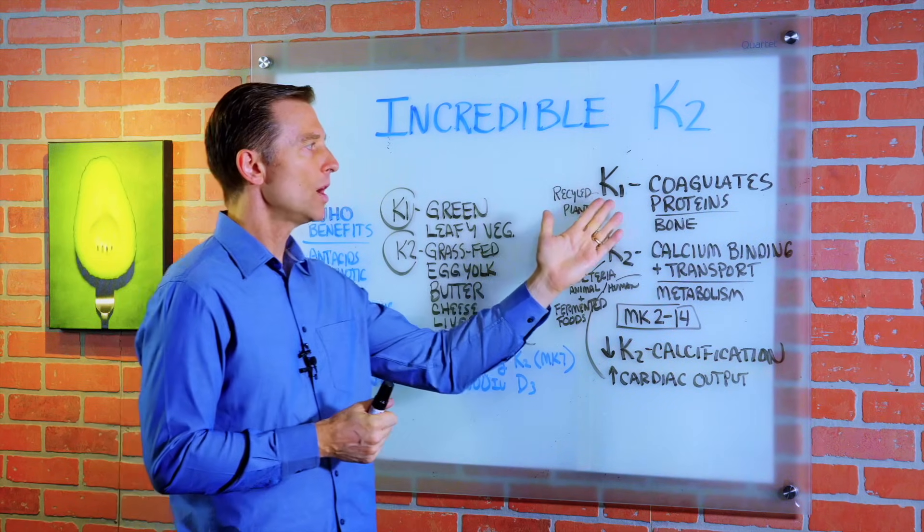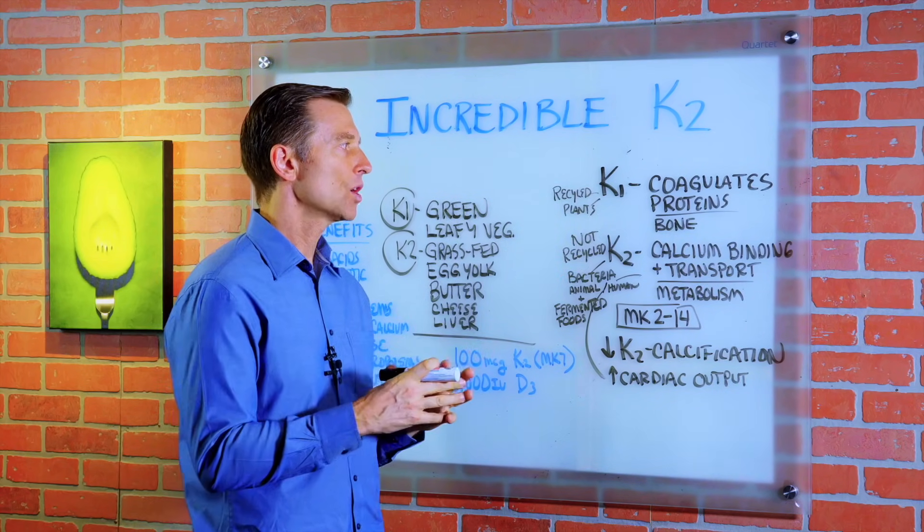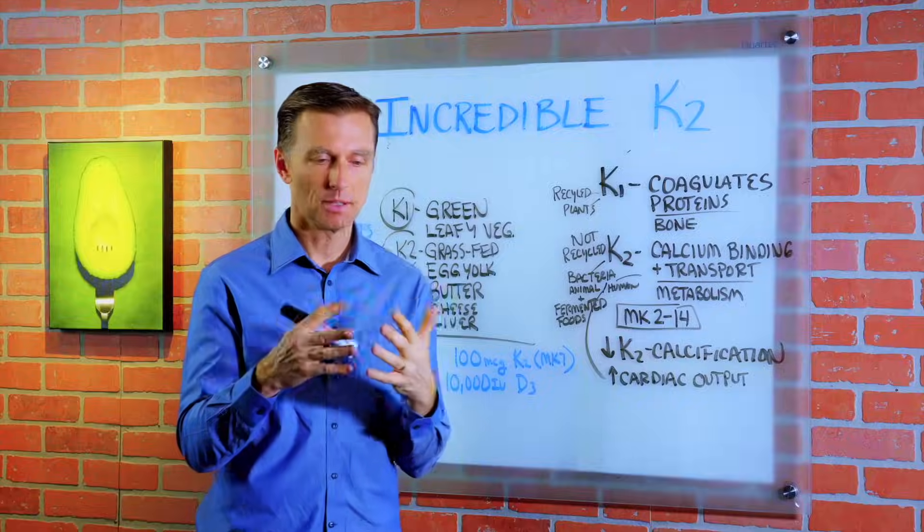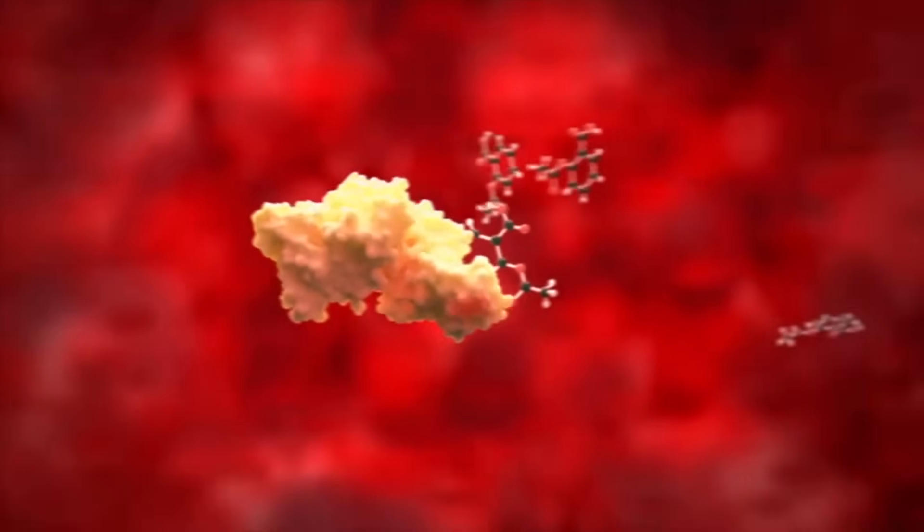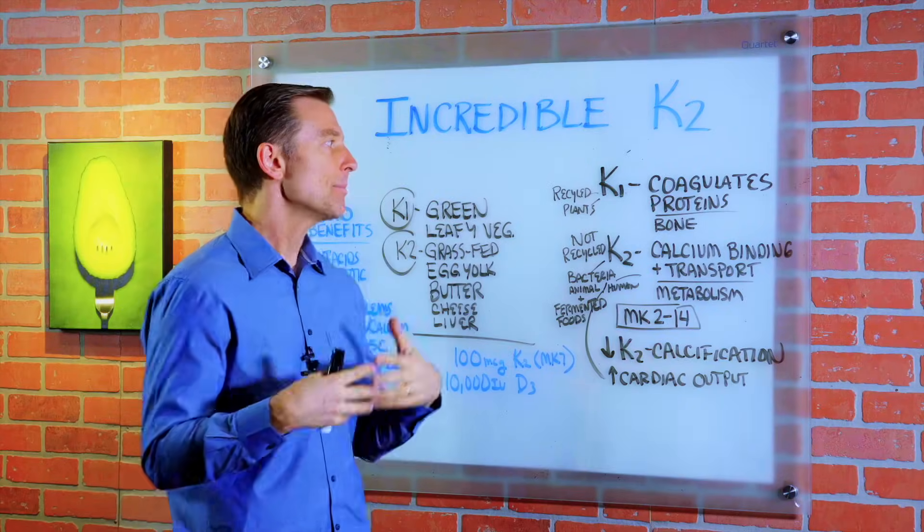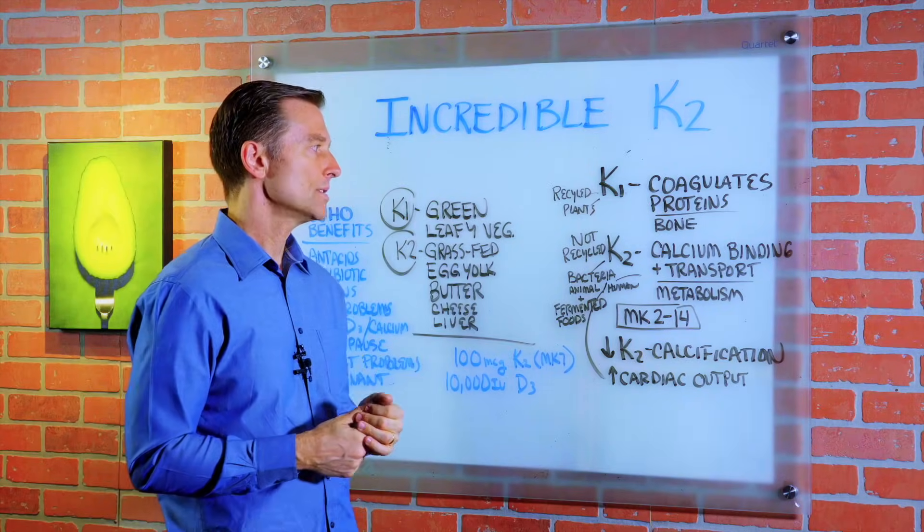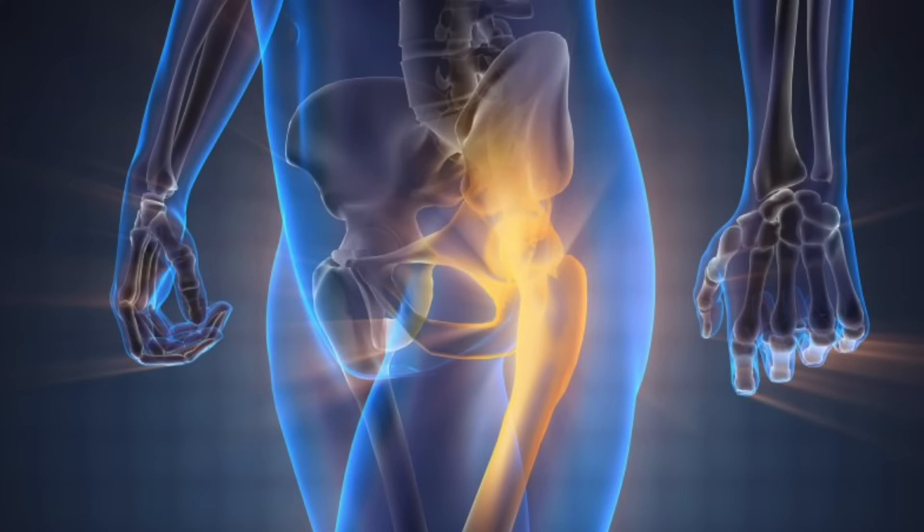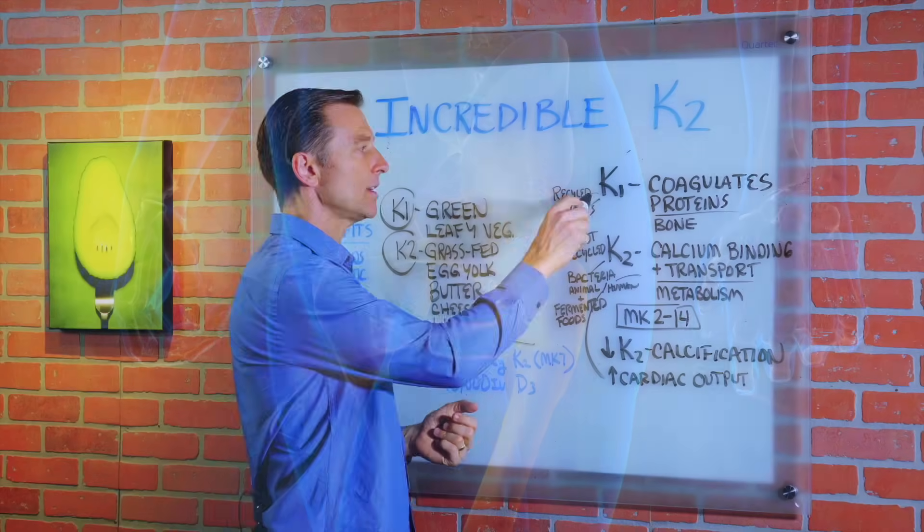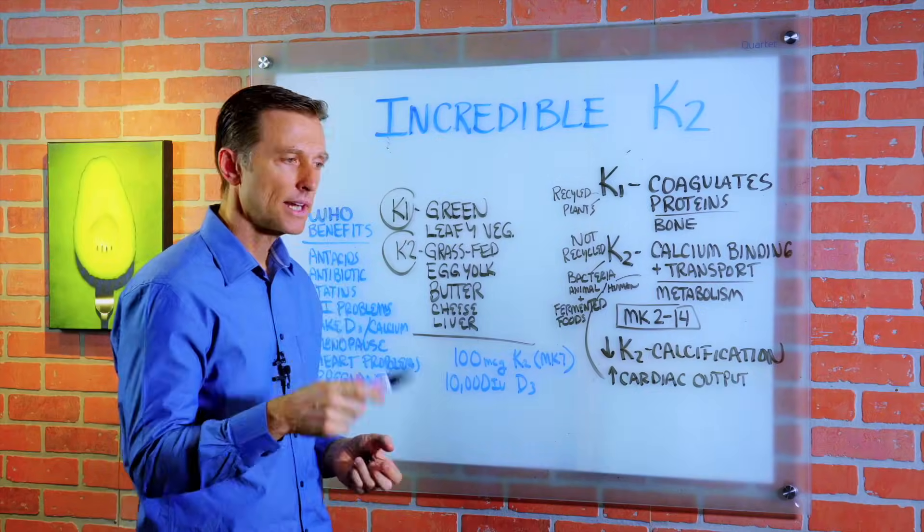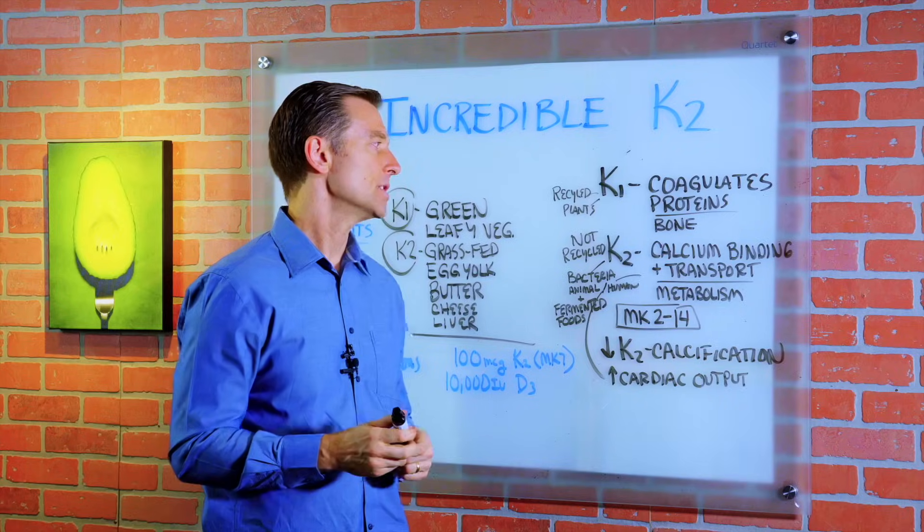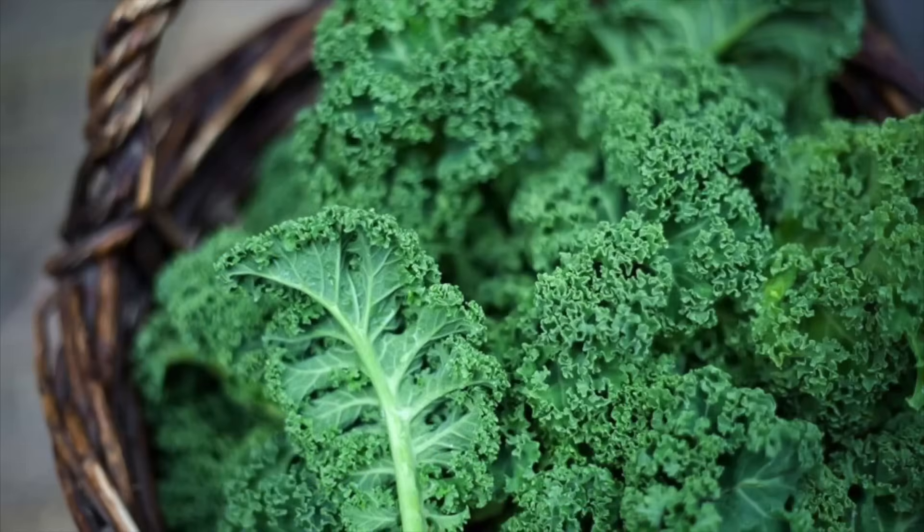Now, vitamin K1 has everything to do with coagulating proteins. It's basically binding proteins and helping form clots, stopping bleeding. It's very important. It's also involved in bone formation and it's recycled. So your body is usually not very deficient in vitamin K1. It's in leafy greens.